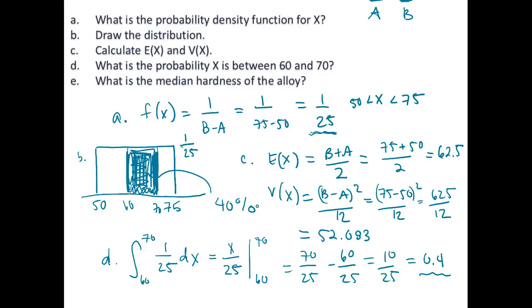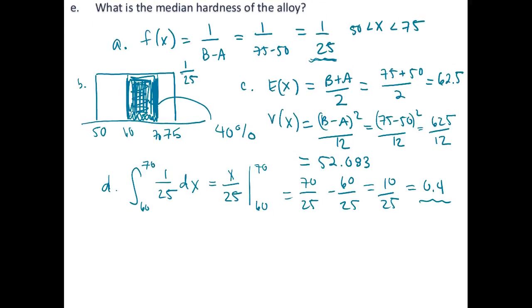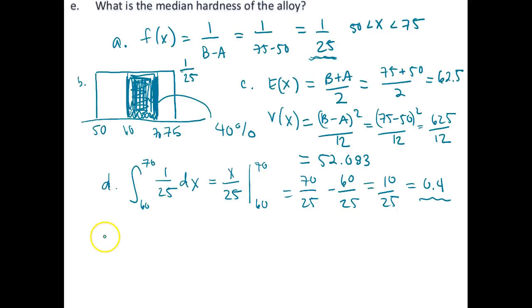So now we want to find the median hardness of the alloy. To find the median, we can calculate this just as we did with any general continuous random variable. This is the integration from the lower bound of 50 all the way up to our median placeholder, integrating over our function dx. This has to be equal to 0.5 by definition of the median. If we integrate this, we again get x/25. We want to evaluate this from 50 up to xm, and this is of course still equal to 0.5.